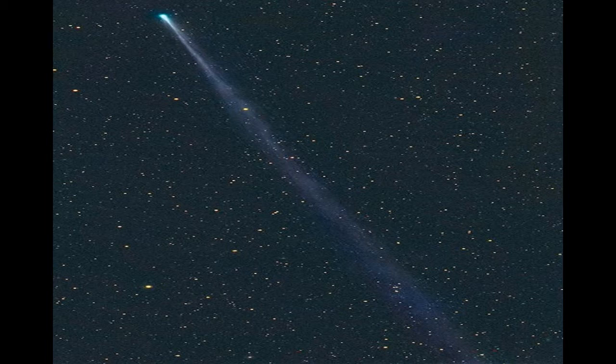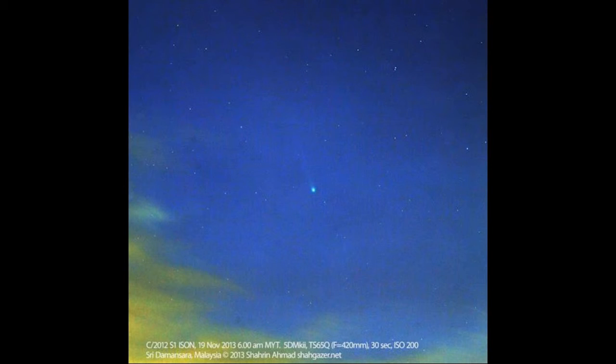The heliospheric imager on Stereo-A will pick up the comet just as Earth-bound telescopes begin to lose it. In the days that follow, Stereo-B, SOHO, and the Solar Dynamics Observatory will join the hunt, providing continuous views of Comet ISON all the way to perihelion. Stay tuned!